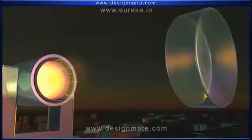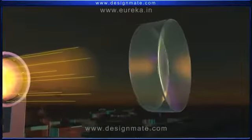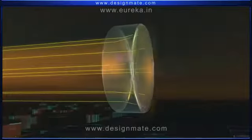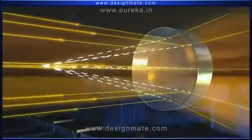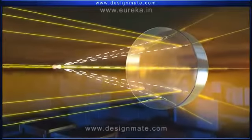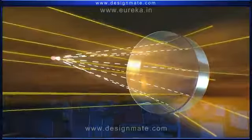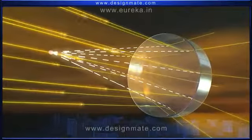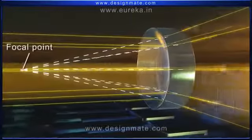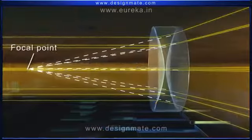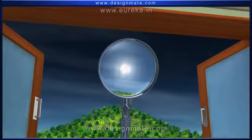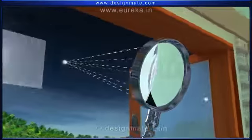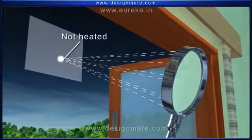The parallel rays of light incident on the concave lens undergo divergence as they emerge on the other side. If the divergent rays are extended backwards, they appear to meet at one point on the principal axis on the same side of the object. This point is called the focal point of the concave lens. The sun viewed from a concave lens would appear as a point, but if you place a paper at this point, it would not be heated.